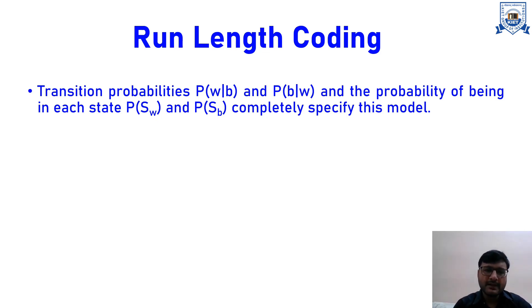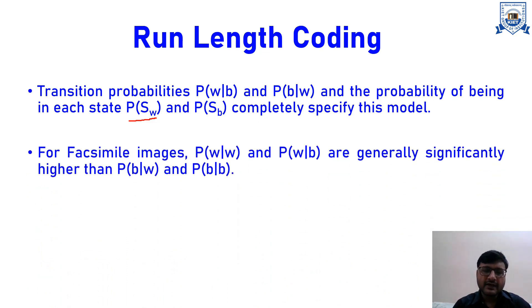What we need are transition probabilities and probabilities of being in a particular state. PW|B is the transition probability: if the current pixel is black, what is the probability that the next pixel is white? The individual probability PSW is: what is the probability of the current pixel being white, without considering the previous pixel. For facsimile images, PW|W — the probability that a white pixel is followed by another white pixel — and the probability that a black pixel is followed by another black pixel are significantly higher than the other probabilities.